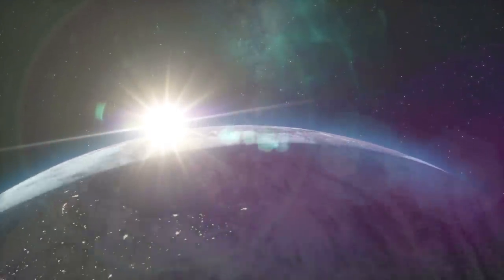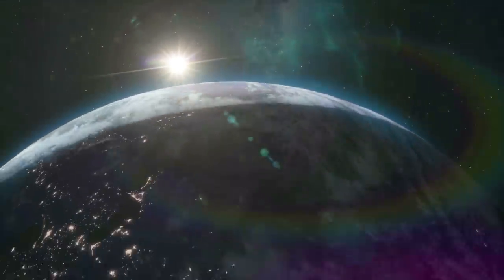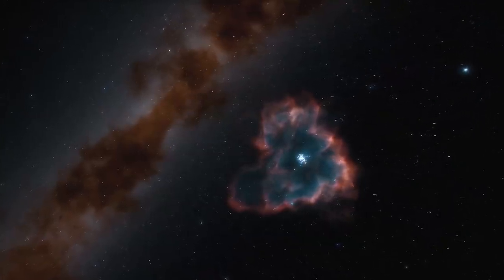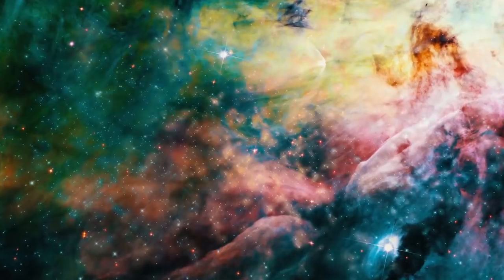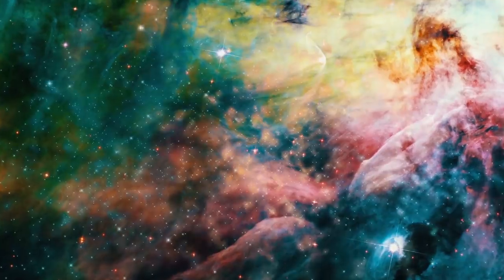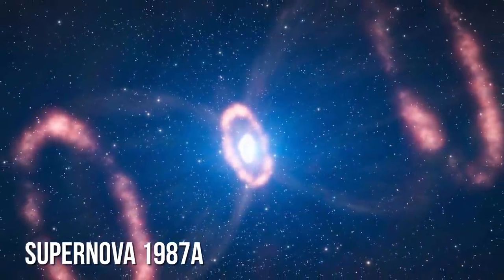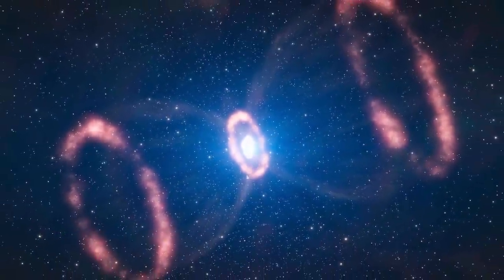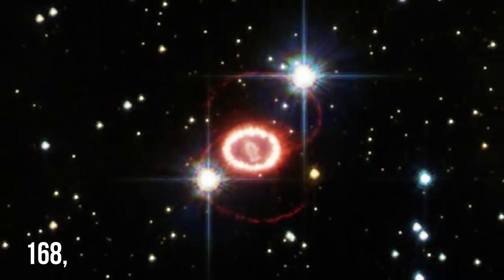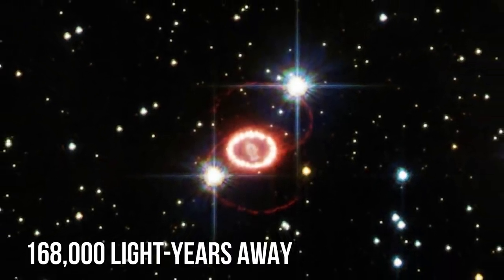All the supernova discovered so far aren't exactly close to Earth. Most are so far away that when observing them we're actually seeing them as they were millions or even billions of years ago. The last supernova close enough to be seen with the naked eye was Supernova 1987A, spotted in 1987 and was around 168,000 light years away.